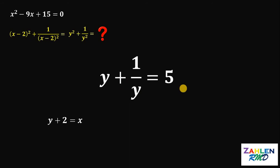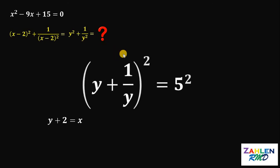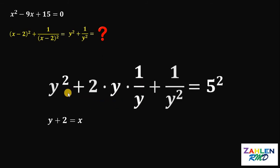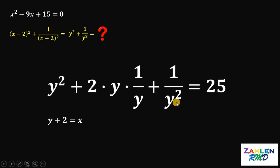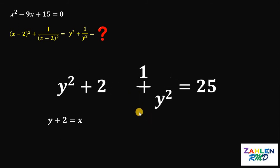Now don't forget what we want — the value of y squared plus 1 over y squared. To achieve that, let's square both sides. We have y plus 1 over y quantity squared equals 5 squared. Expanding the left hand side: y plus 1 over y quantity squared is equivalent to y squared plus 2 times y times 1 over y plus 1 over y squared equals 25. Now 2 times y times 1 over y — the y's cancel out — so this simplifies to 2.